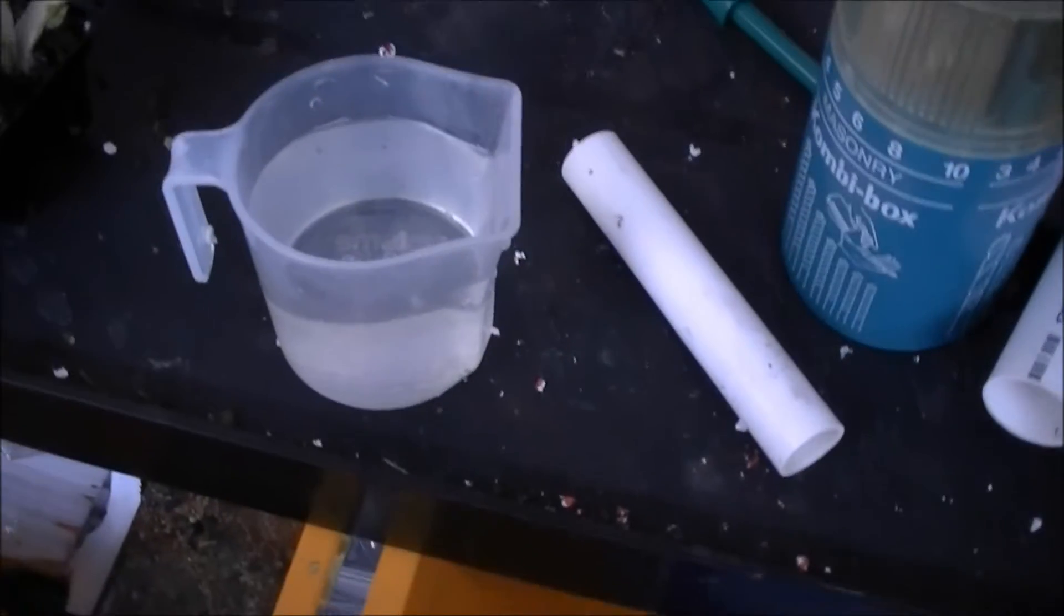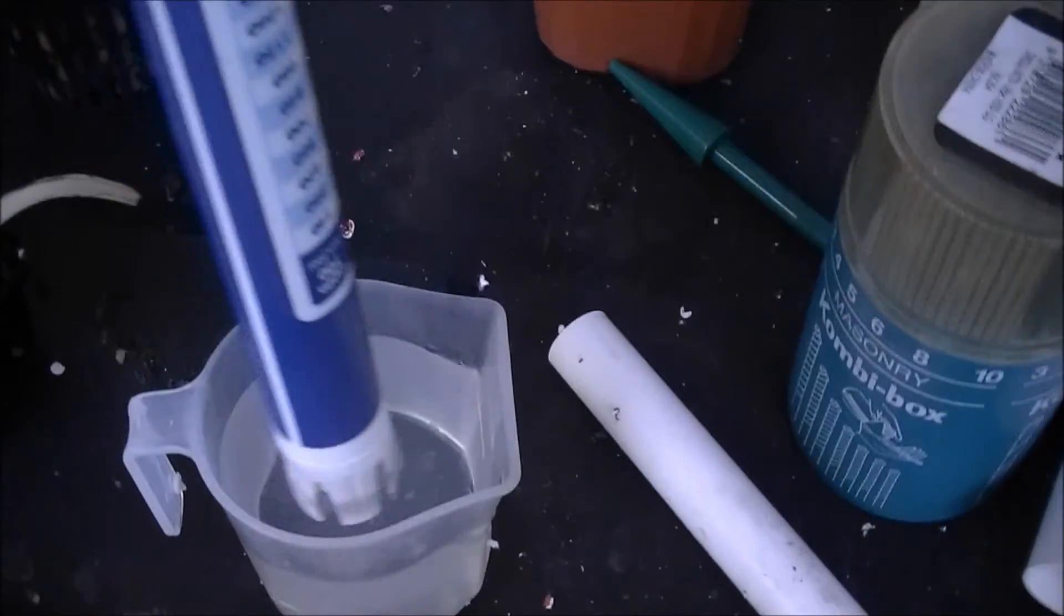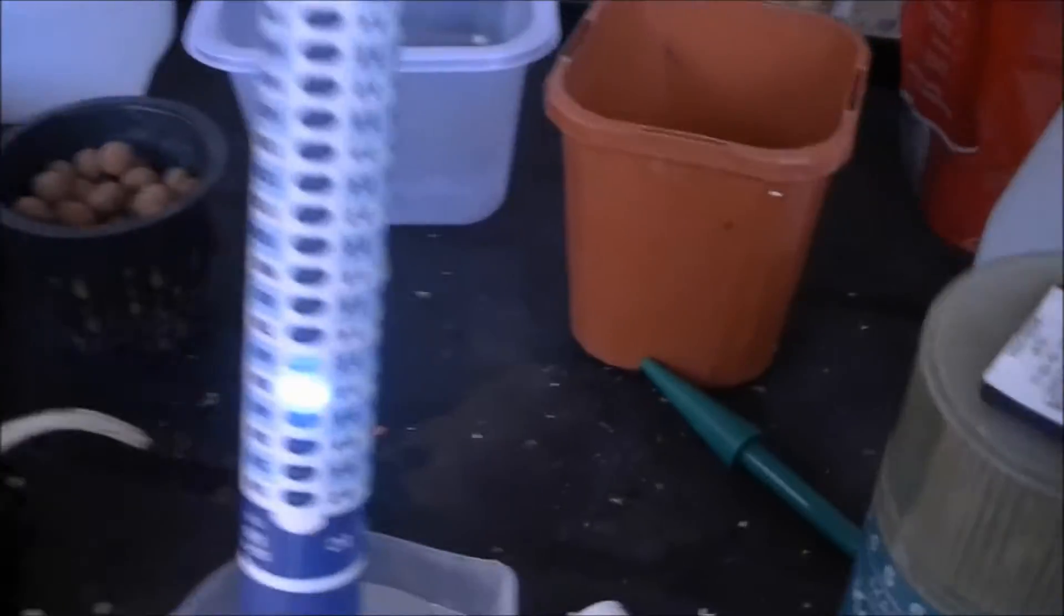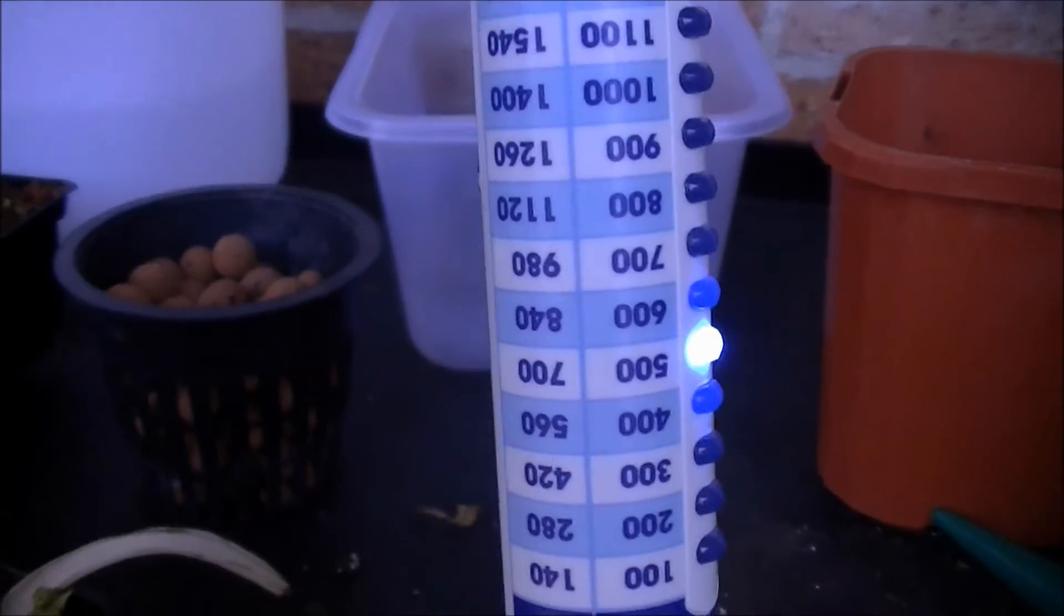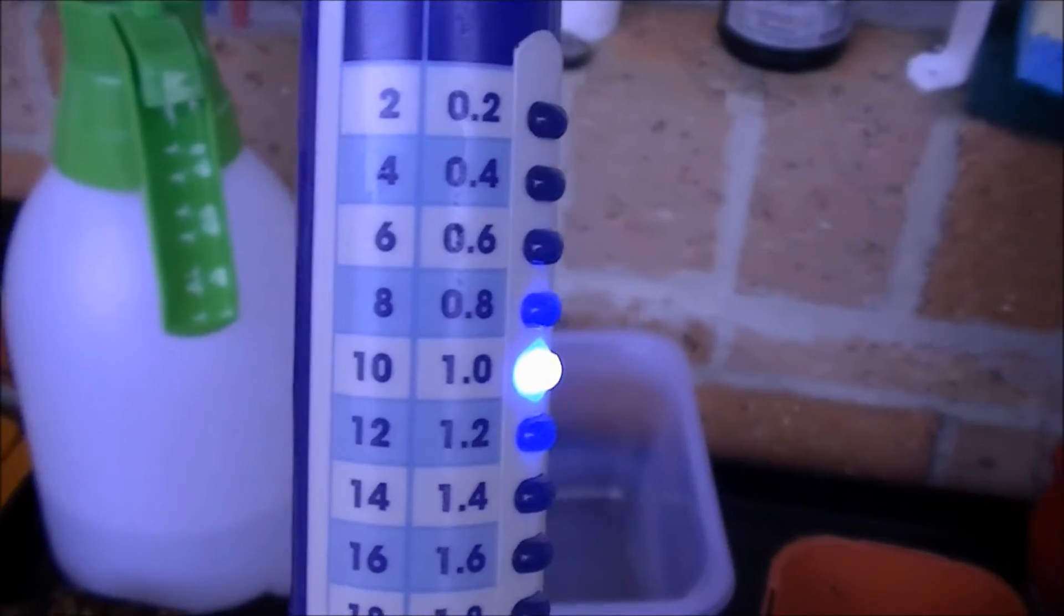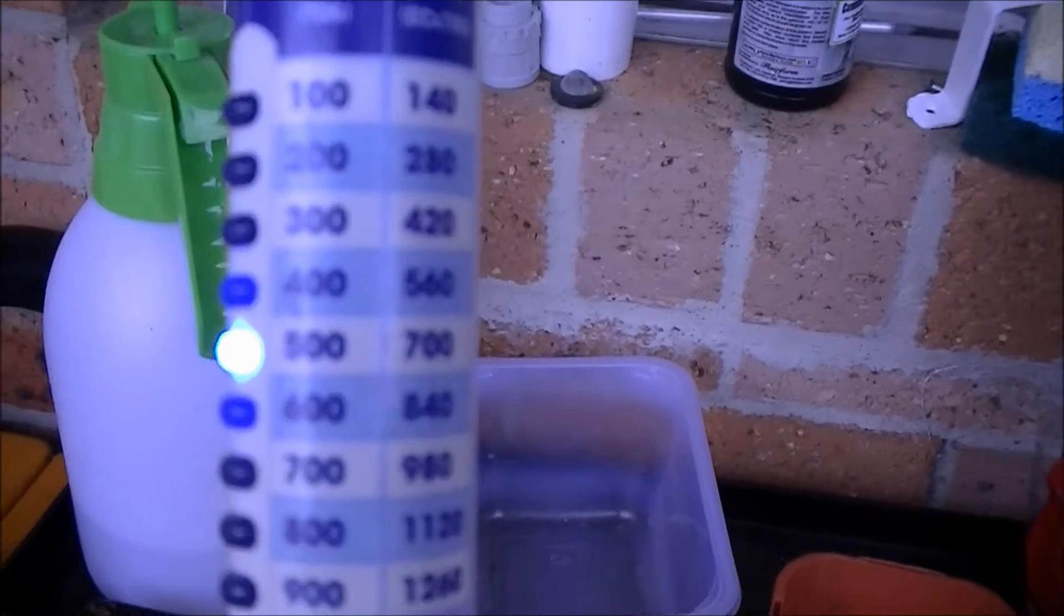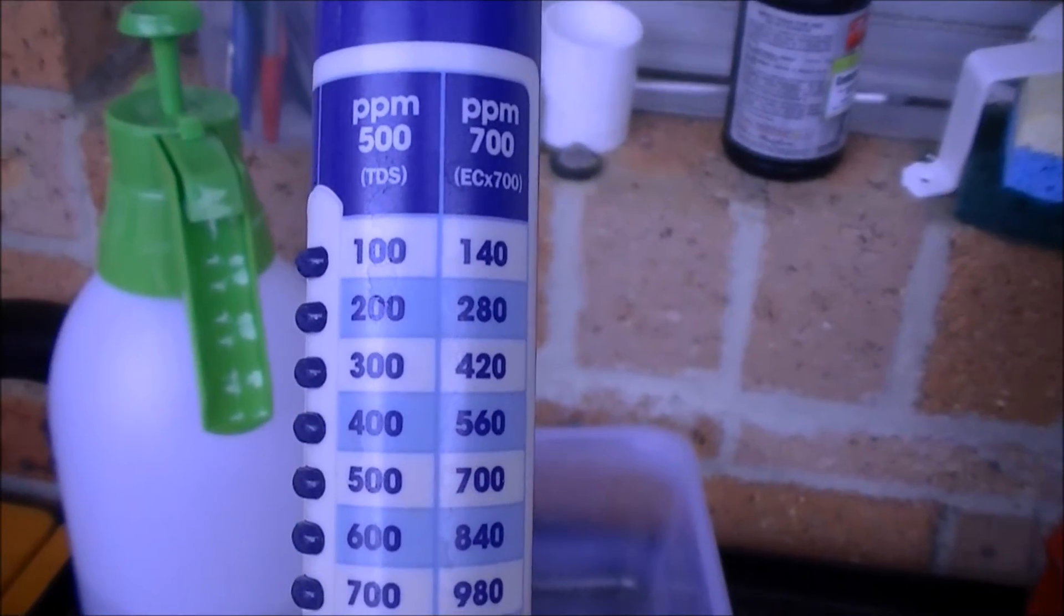Okay, we've taken the sample back over to the workbench. I'll just put the old blue light truncheon in. We're getting a bit of a flash, see if I can bring that up. Okay, it's flashing at an EC of 1, which is 500 on the 500 scale and 700 on the 700 scale.